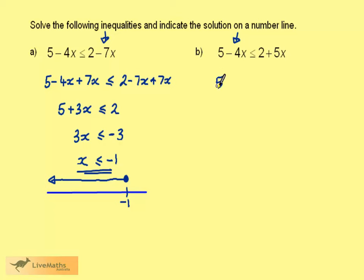That leaves us with 5 on the left, and adding 4x to the right gives us 2 plus 9x. Now subtract 2 from both sides. 5 take 2 is 3, and on the right we have 9x.